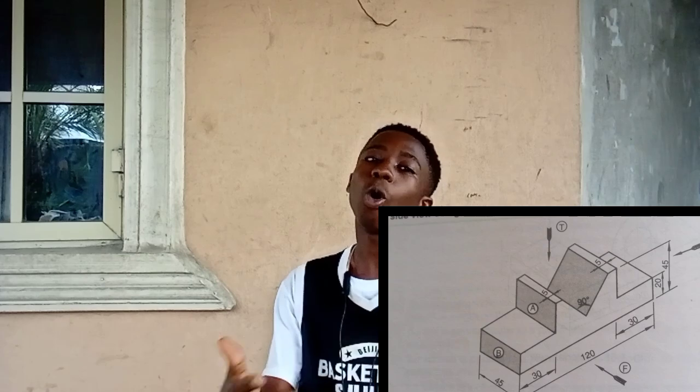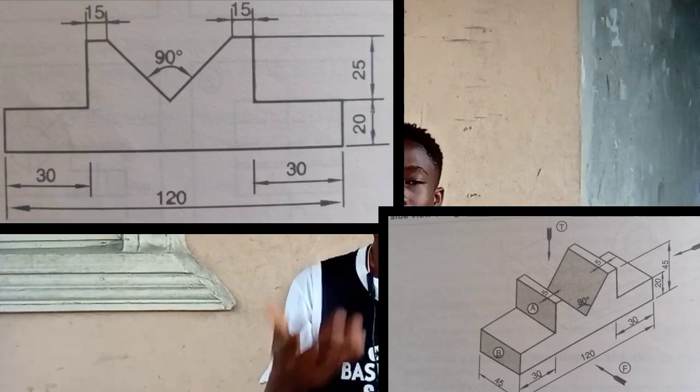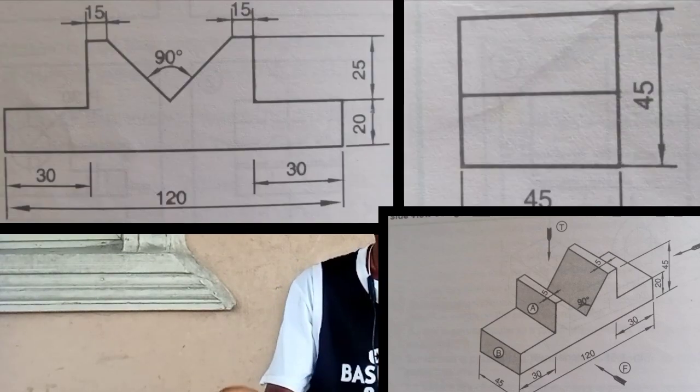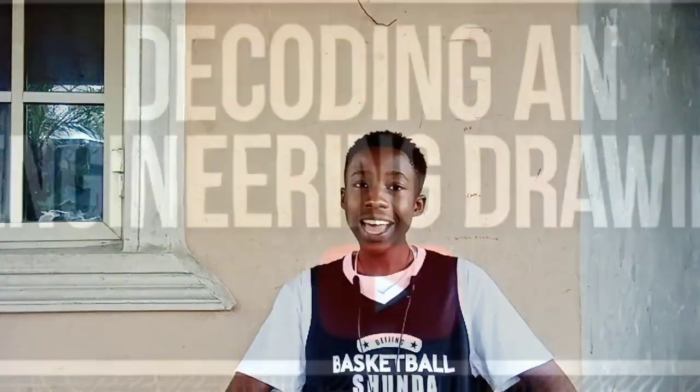Most engineering drawings always come in 3D form or in 2D form. By 3D form, I mean front view, side view, and top view. This actually looks different at different angles, so don't ever confuse it.